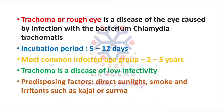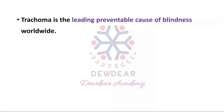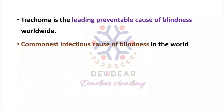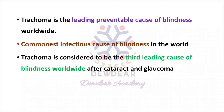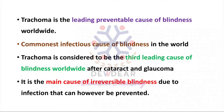Trachoma is the leading preventable cause of blindness worldwide and the commonest infectious cause of blindness in the world. It is considered the third leading cause of blindness worldwide, after cataract and glaucoma. It is also the main cause of irreversible blindness due to infection, which can however be prevented.